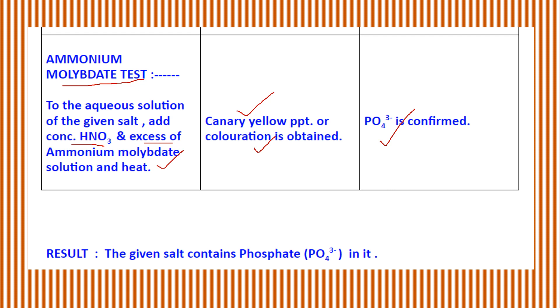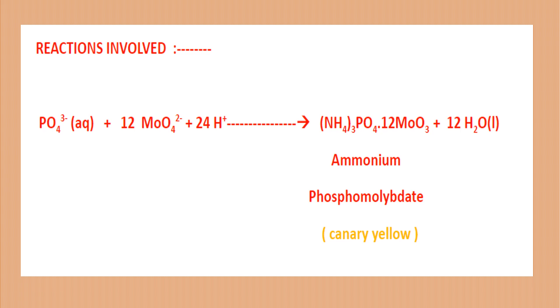The given salt contains phosphate — that would be the result. This is the reaction involved: phosphate in the aqueous solution of the salt with ammonium molybdate gives a canary yellow precipitation due to the formation of ammonium phosphomolybdate, which is canary yellow in color, confirming the presence of phosphate. This completes the salt analysis scheme for anions in the class 11th and 12th syllabus according to CBSE. Our next presentation will cover cations one by one in the same manner. Thank you.